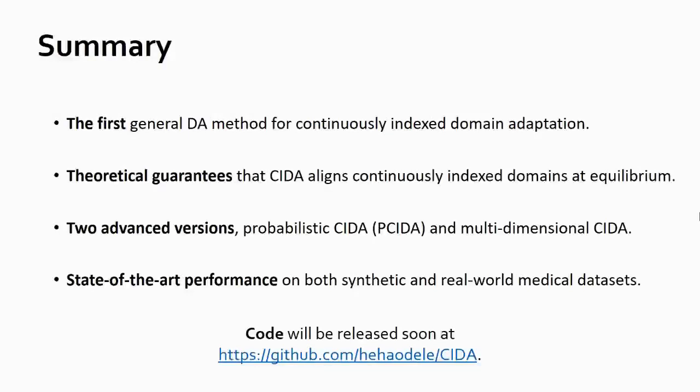In summary, we identified the problem of adaptation across continuously indexed domains and proposed the first general domain adaptation method for addressing this problem. Further, we provide theoretical guarantees that CIDA aligns continuously indexed domains at equilibrium. We provide two advanced versions, probabilistic CIDA and multi-dimensional CIDA, to further improve performance and handle multi-dimensional domain indexes with minimum overhead. Our theoretical results on both synthetic and real-world medical datasets show that CIDA and its variants significantly improve performance over state-of-the-art domain adaptation methods for continuously indexed domains. Thank you.